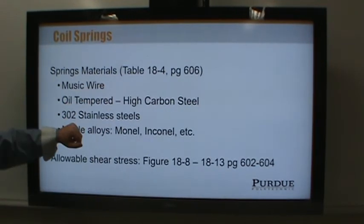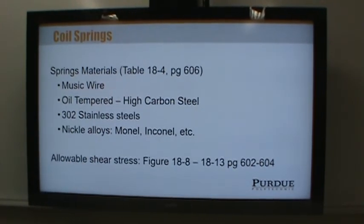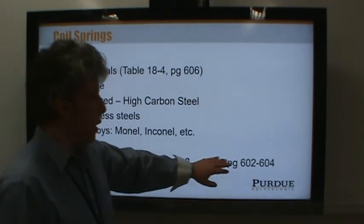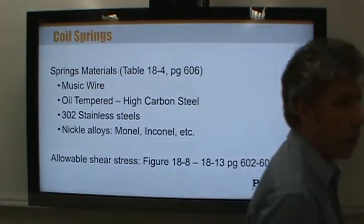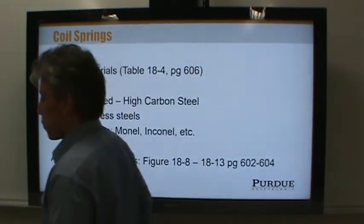There are other types that we'll use. Oil tempered, high carbon steel, 302 stainless. There's some nickel alloys that are in common use for springs as well for higher temperature applications. I just referred to these pages, 602 through 604. Those are the pages we will go to for coil springs with compression and extension springs.